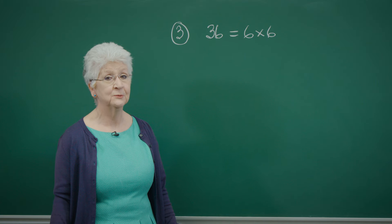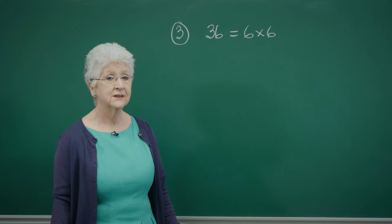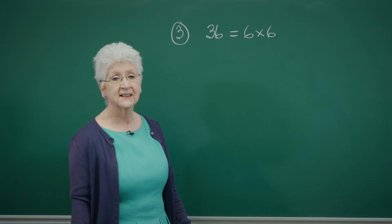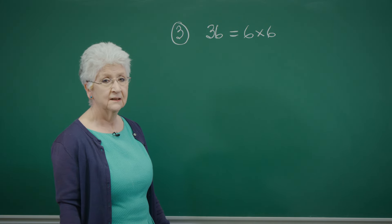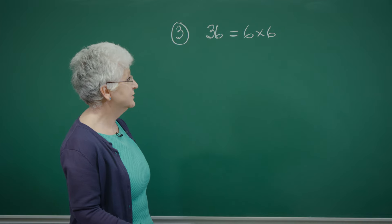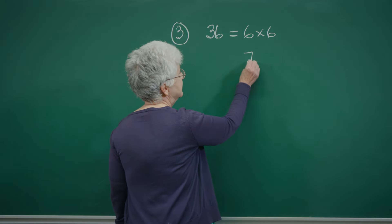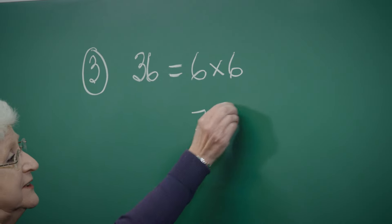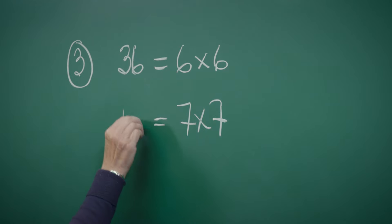For this question we'll need to know our square numbers. 36 is 6 times 6. We're looking forward, so the next square number is 7 times 7, which is 49.